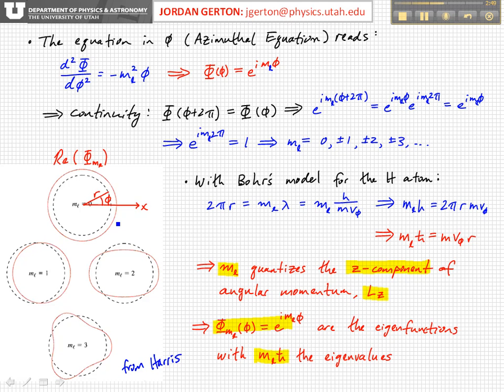What's shown here is the distance either outward or inward from this dotted line representing the value of big phi as you go around the azimuthal direction. So for ML equals zero, this is just a constant, positive constant. For ML equals one,